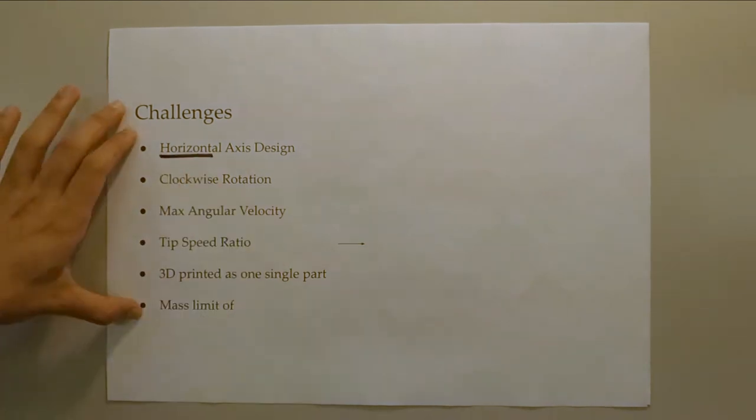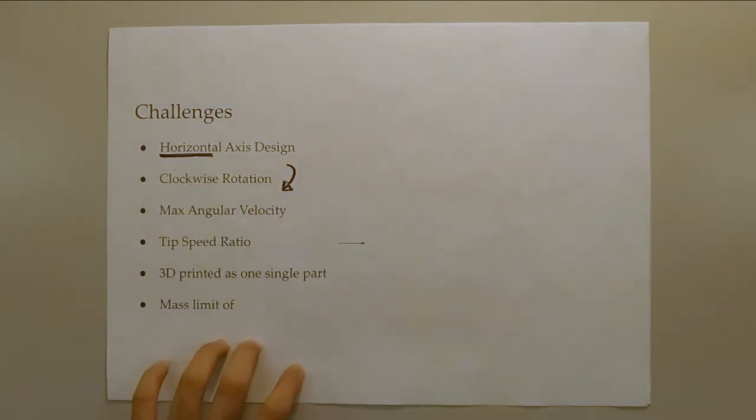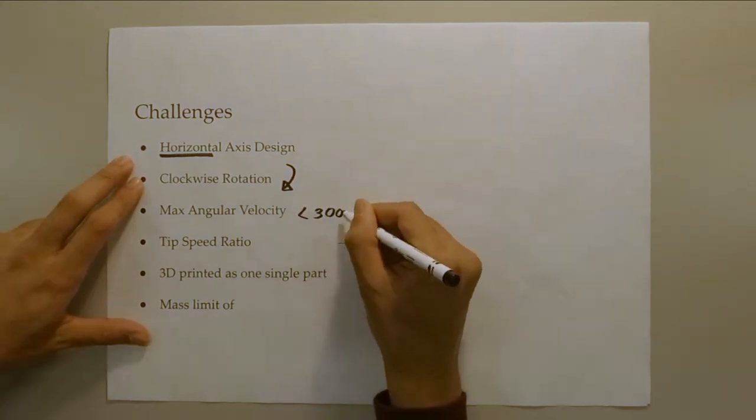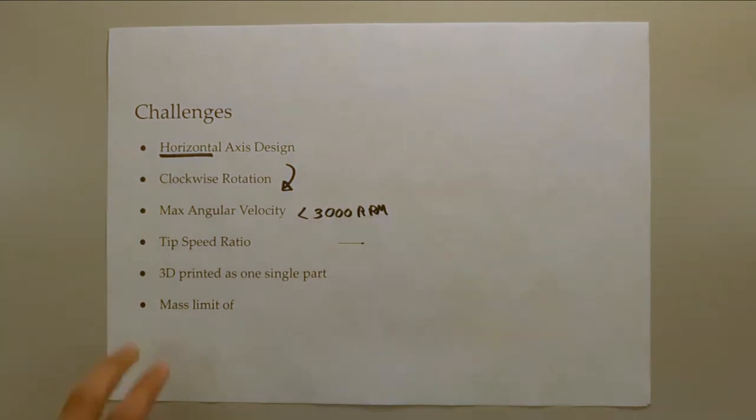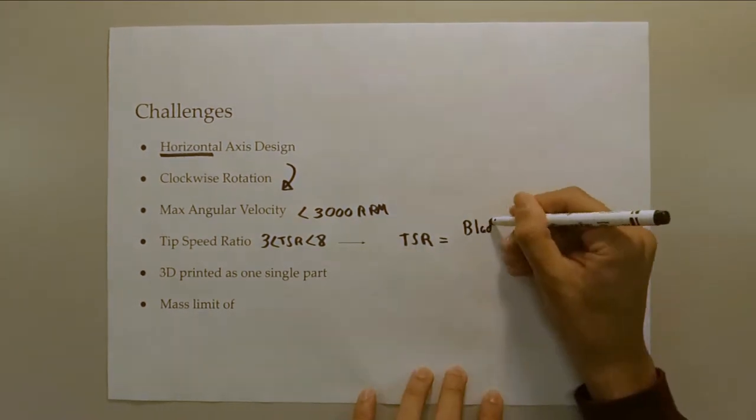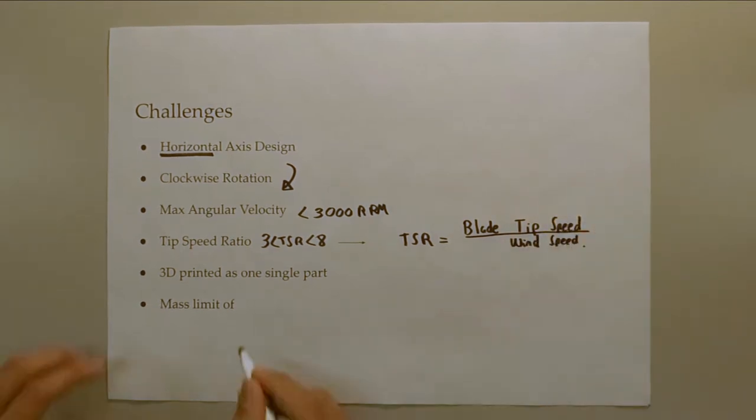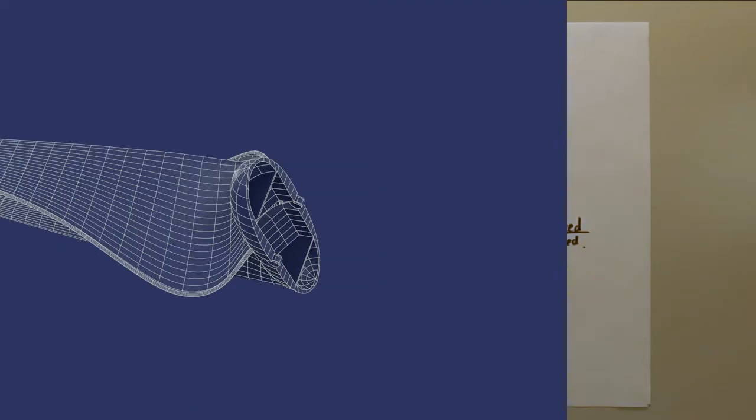The turbine had to have a horizontal axis design with a clockwise rotation and a maximum angular velocity less than 3000 rpm. In addition, it had to have a tip speed ratio between 3 and 8, as well as being 3D printed as one single part and able to fit in the following box.